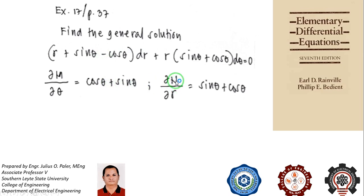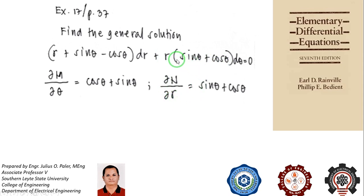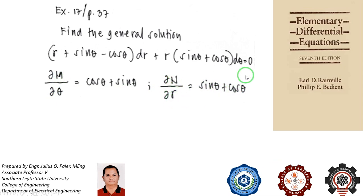For the N term, since we are differentiating with respect to r, θ, sinθ, and cosθ are constants. The derivative of r·sinθ is sinθ, and the derivative of r·cosθ is cosθ. So the partial derivative of M with respect to θ equals the partial derivative of N with respect to r — this is an exact differential equation.